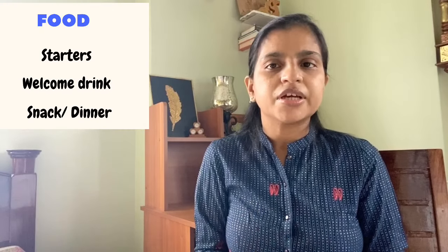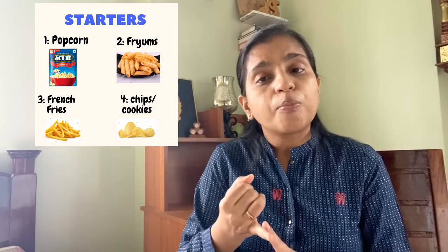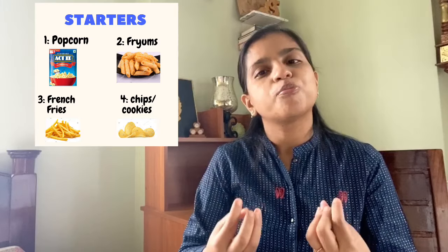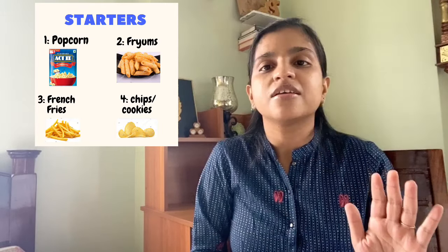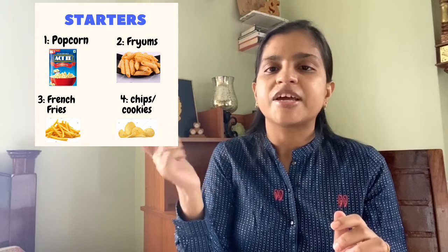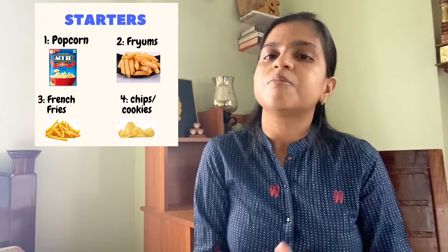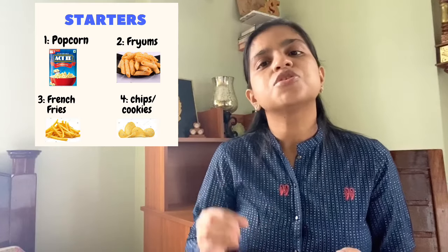The basic menu for a party includes beverages or drinks, then starters, followed by snacks or dinner. For starters, you can give fries or popcorn. A 10-rupee packet of popcorn, when cooked in a pressure cooker, pops out well. If you have 15 guests, 2-3 packets will be enough for starters. You can also make finger chips or simple French fries at home. Keep some extras in reserve for emergencies.